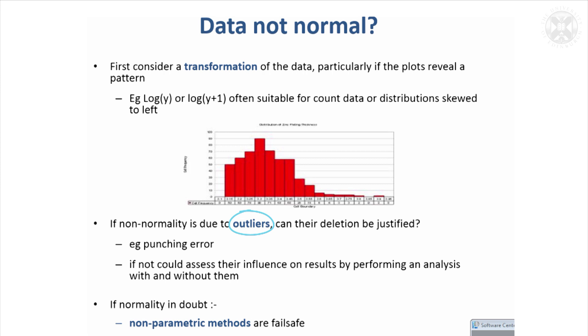Perhaps there was an error in recording the data or something was wrong with that particular measurement. If that's the case, you could justifiably take it out of the analysis. Or you could consider taking it out and assessing how much influence it has on the results by comparing an analysis with and without the outlier.